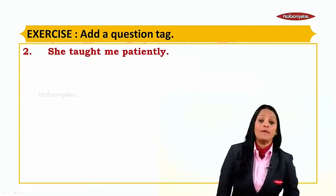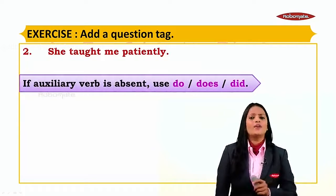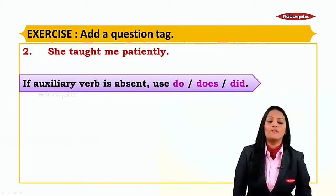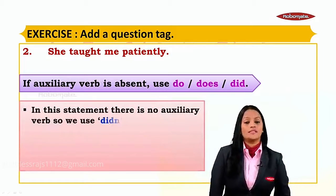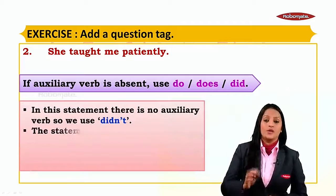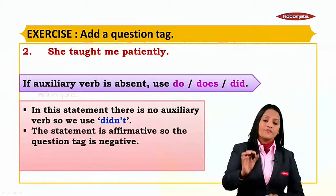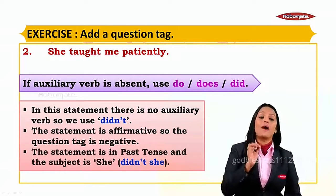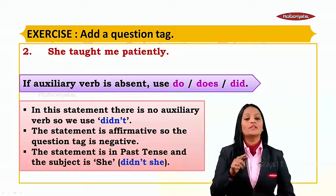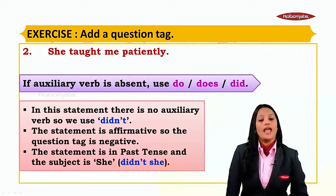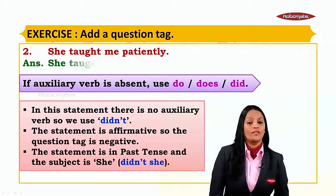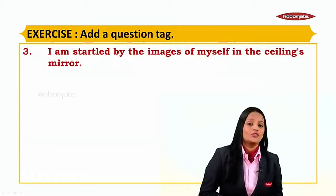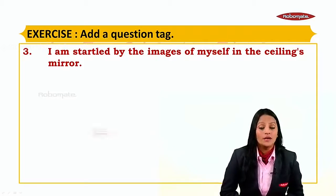Next one: 'She taught me patiently.' The auxiliary verb is absent, so we use 'do' or 'does' for present tense and 'did' for past tense. In this statement there is no auxiliary. The statement is affirmative, so the question tag is negative. The statement is in past tense, so we use 'did', but the negative of 'did' is 'didn't'. The subject pronoun remains the same - so the answer is 'didn't she'.